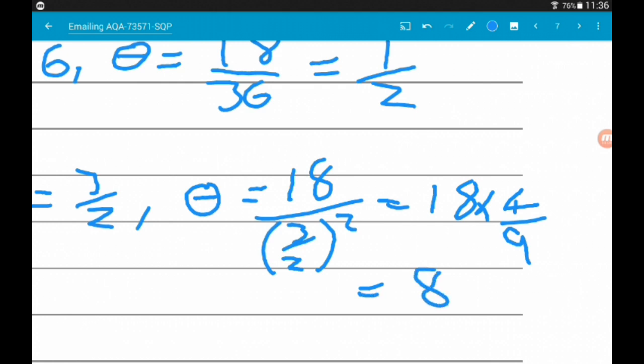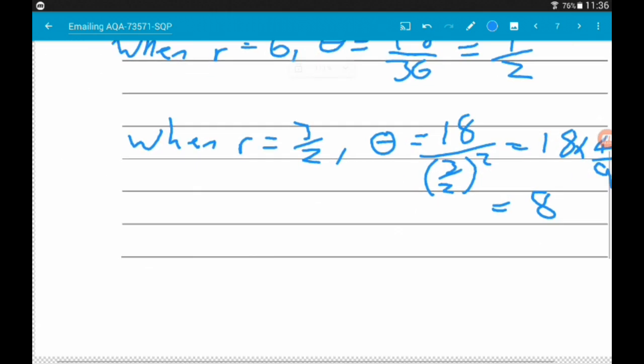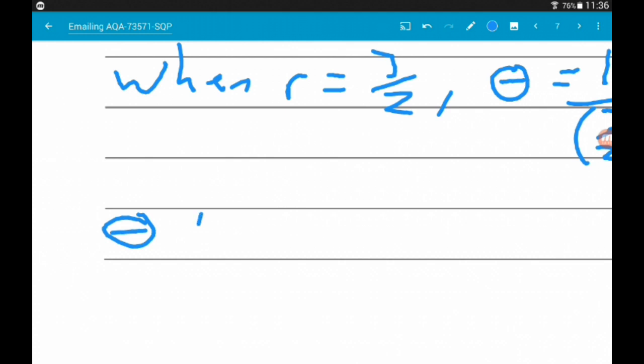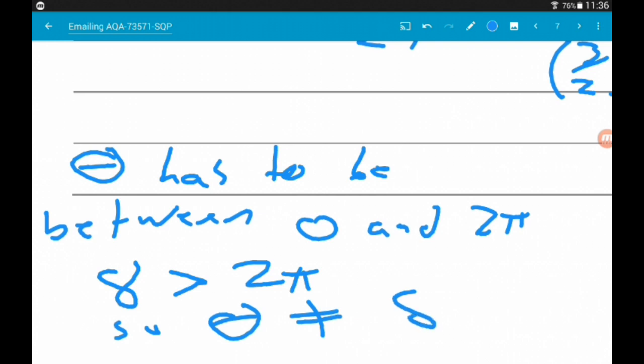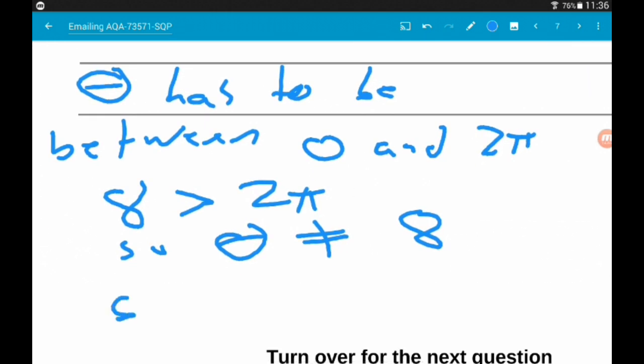Now, we do have a problem there. Now, remember, θ has to be between 0 and 2π. Now, 8 is greater than 2π. So θ cannot equal 8. So θ is only equal to 1/2.